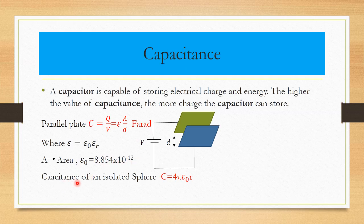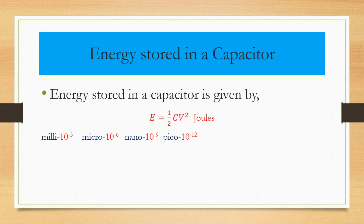The capacitance of an isolated sphere is given by C = 4πε₀r. The energy stored in a capacitor is E = ½CV², where C is the capacitance and V is the potential. Capacitor values are commonly expressed as milli (10⁻³), micro (10⁻⁶), nano (10⁻⁹), or pico (10⁻¹²).